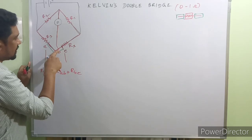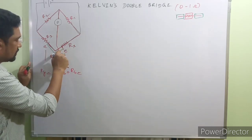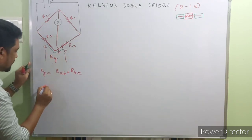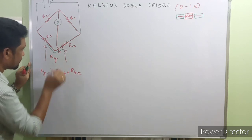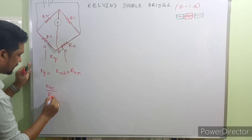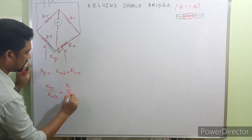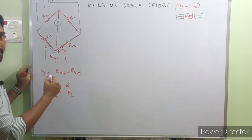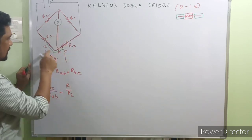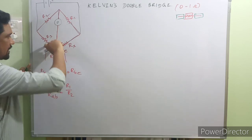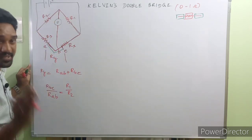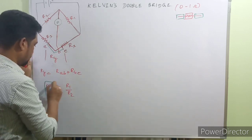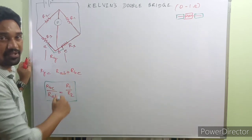What is the significance of finding this place B? We have to find a point B to connect the detector such that we maintain a ratio: RBC by RAB is equal to R1 upon R2. This ratio should be equal — not the values, but the ratio. Maintaining this ratio will eliminate the interference of lead resistance. This is the game-changing condition in Kelvin's double bridge.